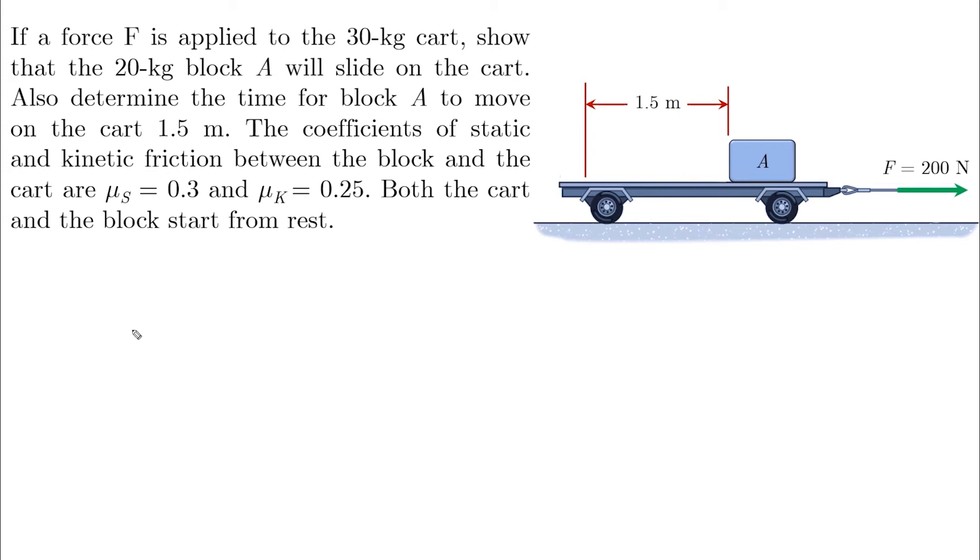Because delta S is equal to V0 times T plus 1.5 A T squared. So if you know delta S, and you know that the initial velocity is equal to zero, all what you need now to find the time, is to find the acceleration.